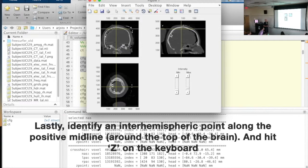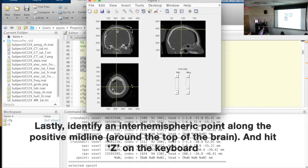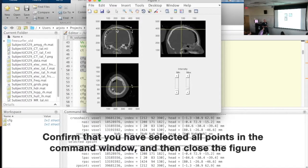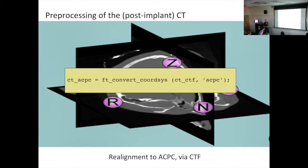Hit R. And the nasion. This is at the root of your nose, right here. And then, again, a midline point hitting Z. Okay, you want to check that you have all coordinates here, all landmarks, nasion, left, right, and Z. And now your CT scan is in CTF space. It's not in ACPC space yet, but you can call FT_CONVERT_COORDSYS, which will do an automatic conversion. And you give your CT as input in CTF space, this is your target coordinate system, and you'll get your CT out in ACPC space.